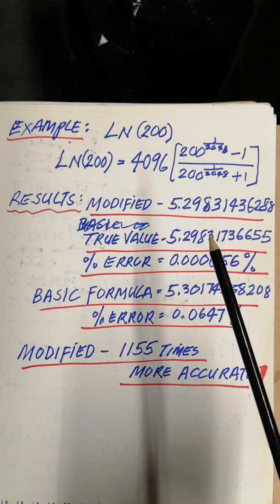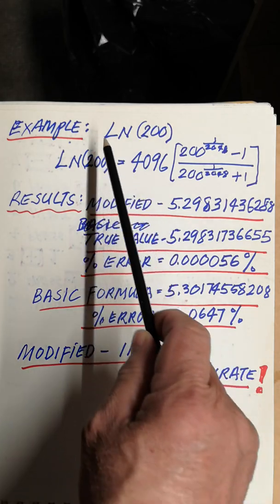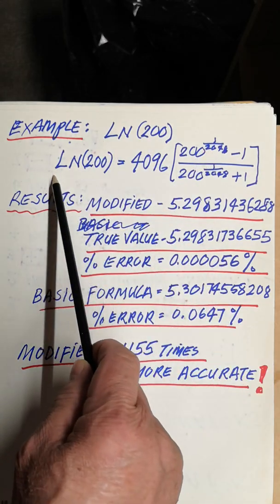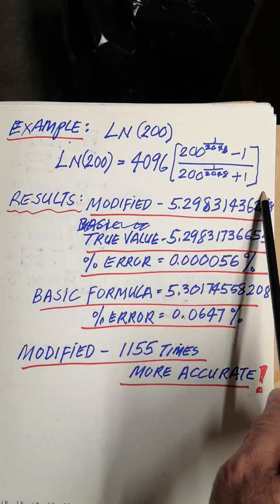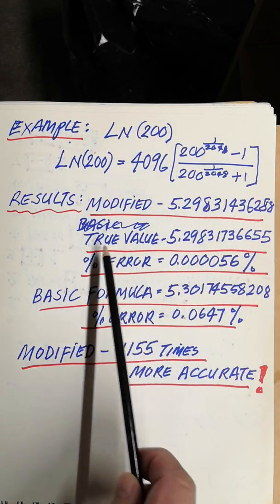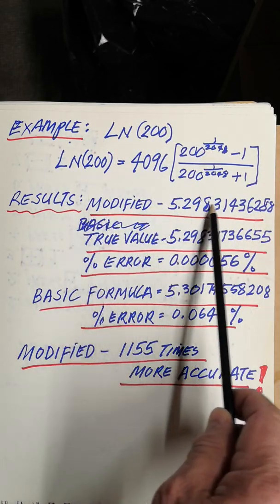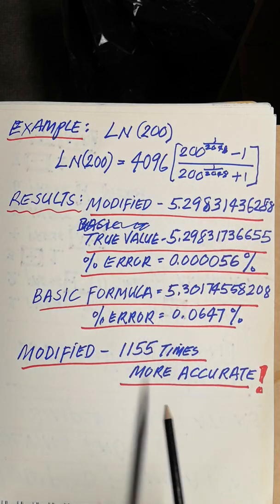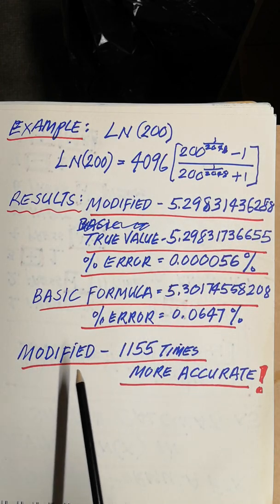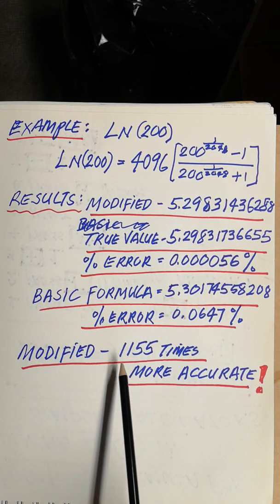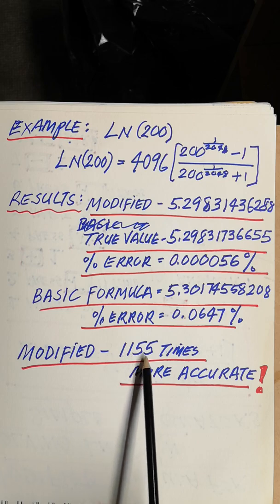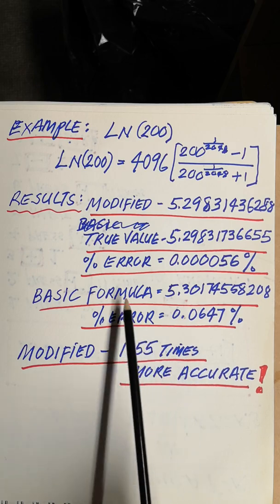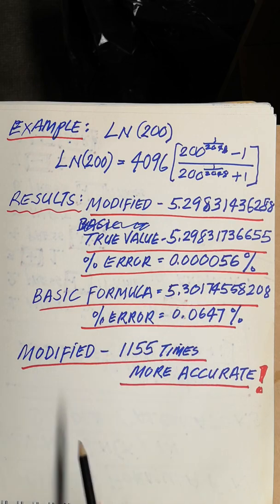The example for ln of 200 uses this formula. And these are the results. The modified formula is proven to be 1,155 times more accurate than the basic formula.